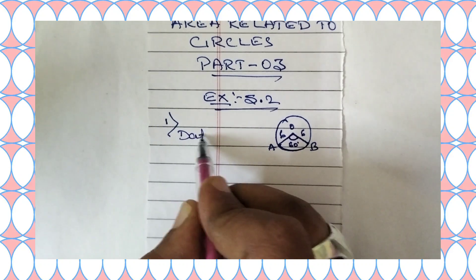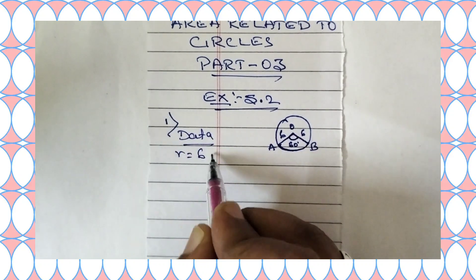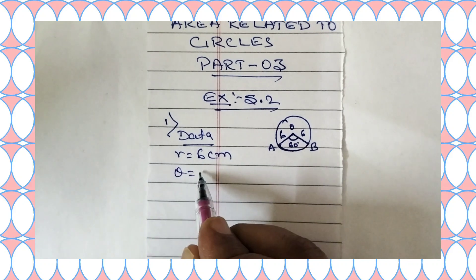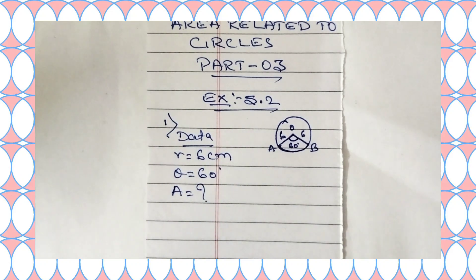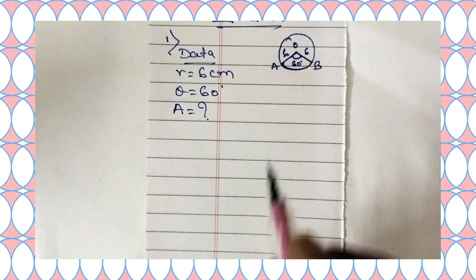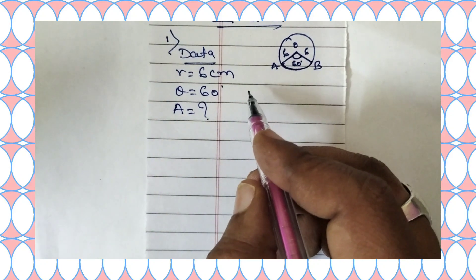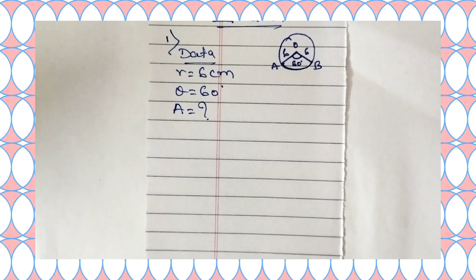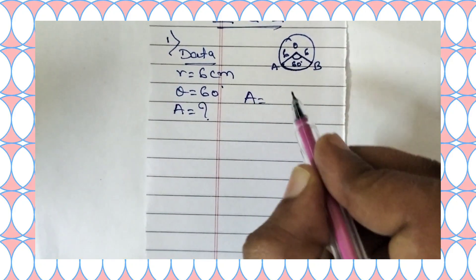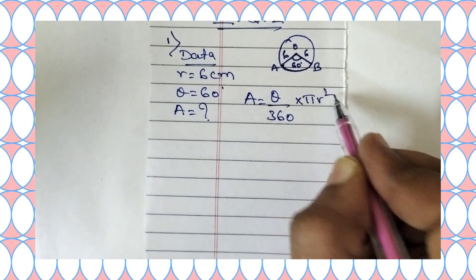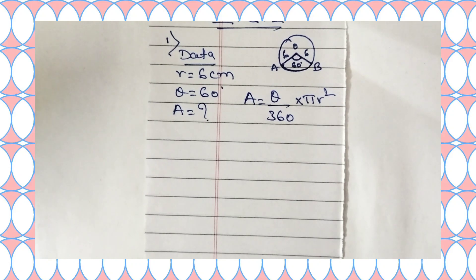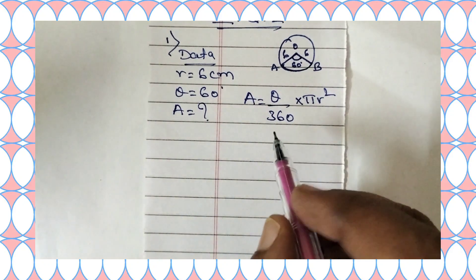Let us make a list of data. Radius is equal to 6 centimeter, theta is equal to 60 degrees. Now we have to find out the area of the sector. The formula to find area of a sector — which we have studied in part one of this chapter — is: area equals theta divided by 360 into pi r square.